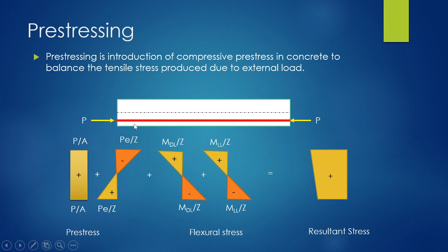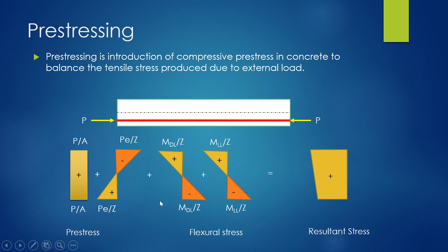The resultant stress will be: prestress force P/A (A is the cross-section of the beam) plus P·e/Z, where e is the eccentricity and Z is the section modulus, which may change at top and bottom. Above it is minus and below it is positive (compressive). The moment due to external load is M/Z — moment due to dead load by Z and moment due to live load by Z. Due to external loads there is compression at top and tension at bottom.